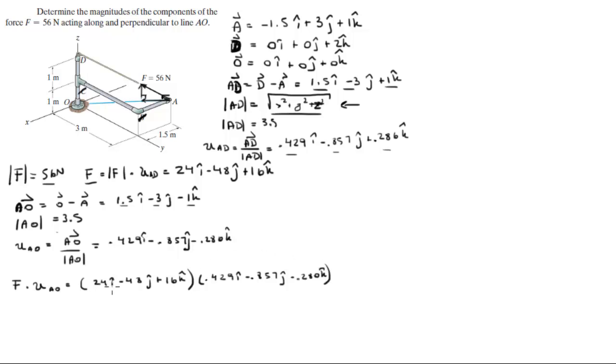So 24 times 0.429 comes out to be 10.3, plus negative 48 times 0.857 is positive 41.1, and 16 times negative 0.280 comes out to be negative 4.58. So when you add this up you're going to get that it's equal to 46.8. And that is this vector right here.